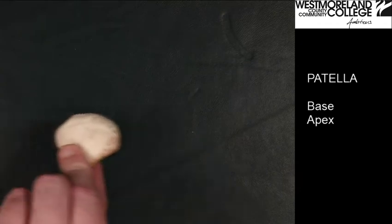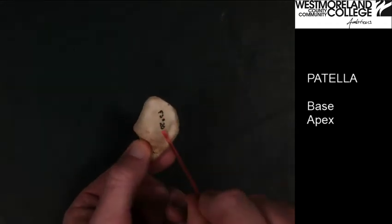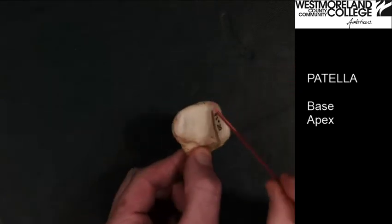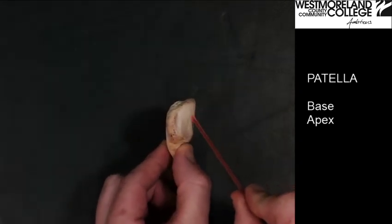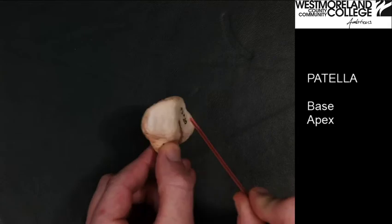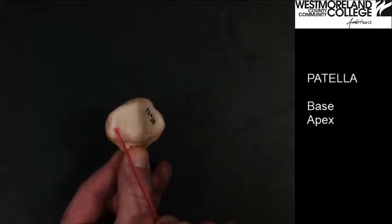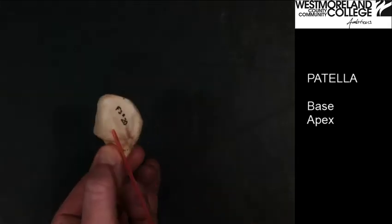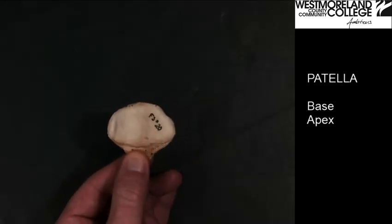Looking at the same on the other one — we flip it over. We have a larger side of the condyle versus a smaller side of the condyle. The smaller one would be medial, larger is lateral. If this were lateral, this would be a right patella.